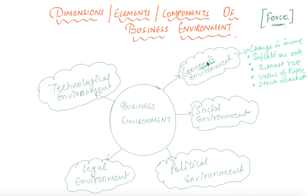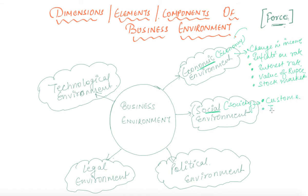Coming towards the social environment — as the name says, social — these are basically linked to the society. If we talk about what the social environment consists of, first of all it's your customs. Even in a single country there are so many states, and each state or even each town has their own tastes, preferences, and customs. So it's your customs and traditions, whatever your society likes. Next is society's expectation from business, and next are whatever their values are.